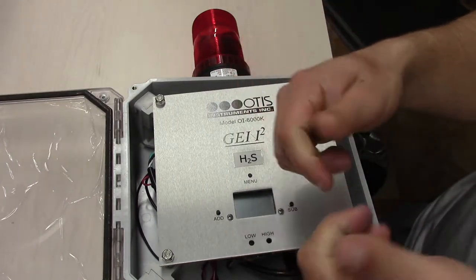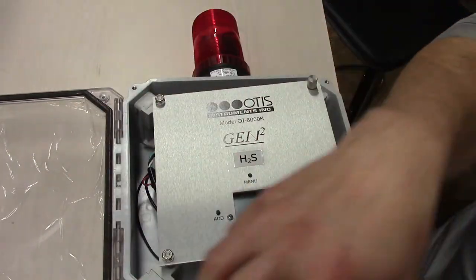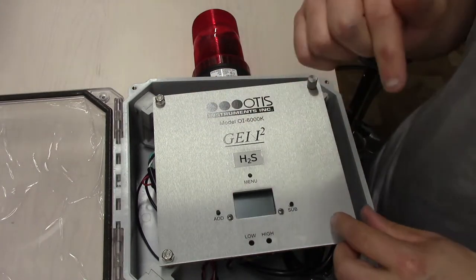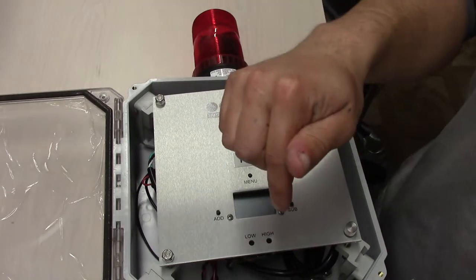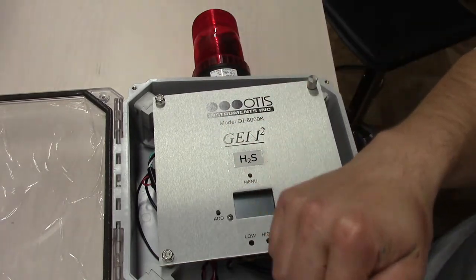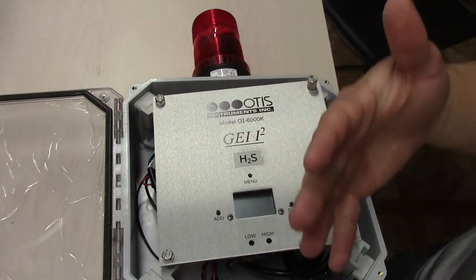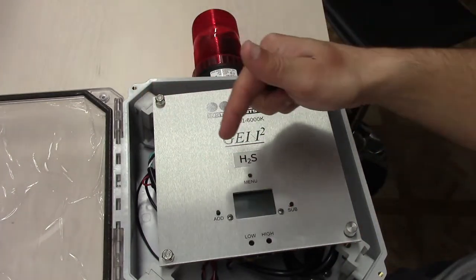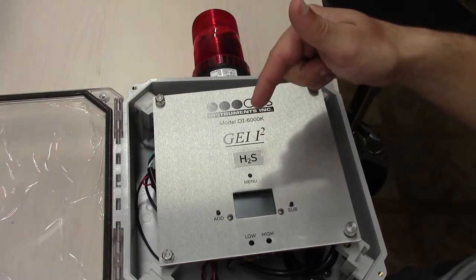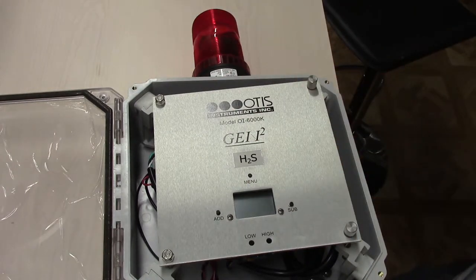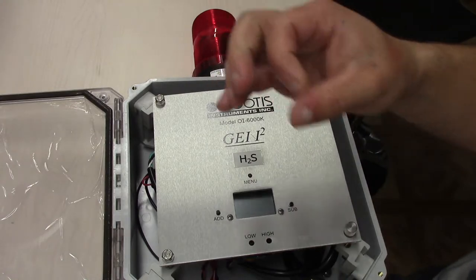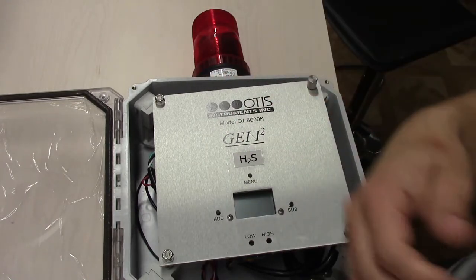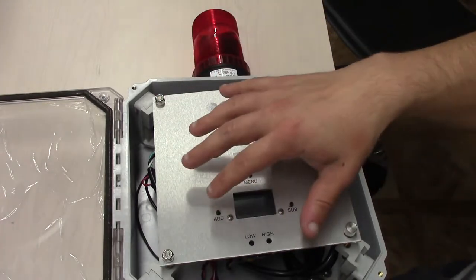The output puts out either a 4 to 20 signal or a Modbus signal, depending on what your system uses. If you don't have any monitors, Otis also has monitoring units. I'll do those in a separate video. But if you already have a system in place that takes 4 to 20 or Modbus, this instrument produces both of those signals.